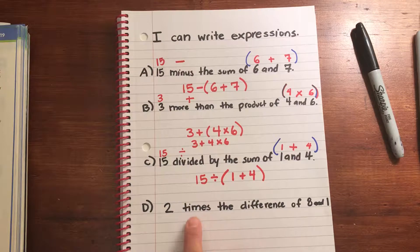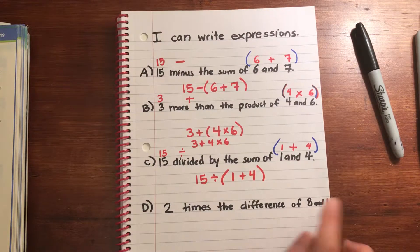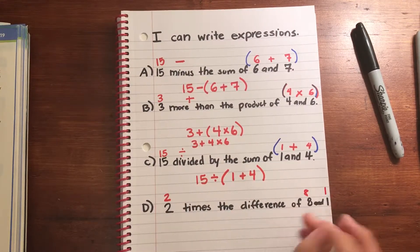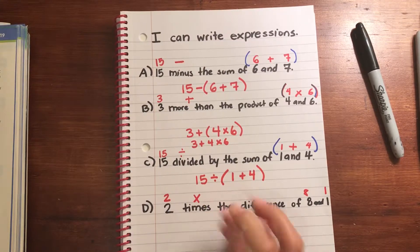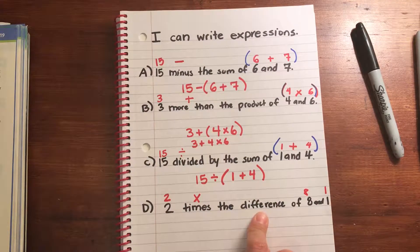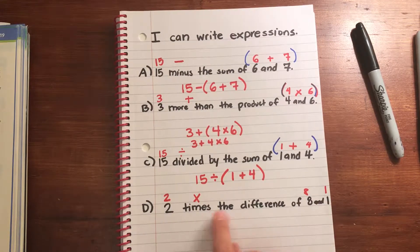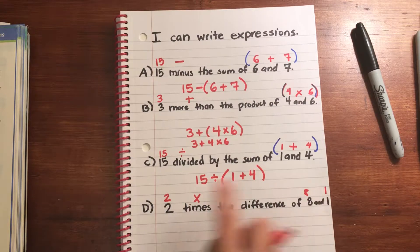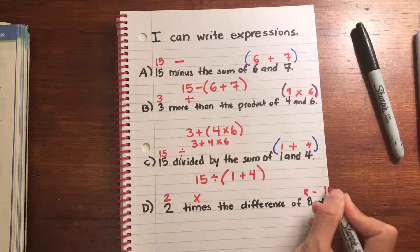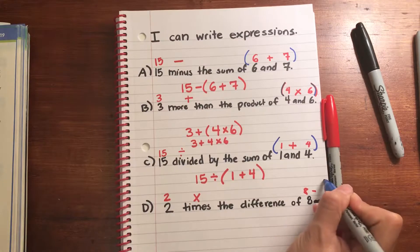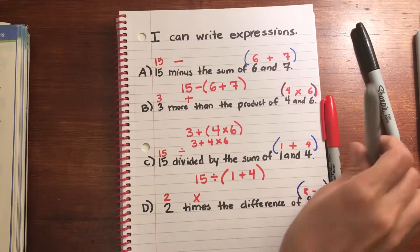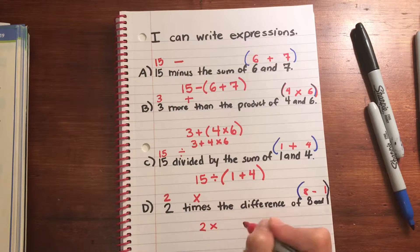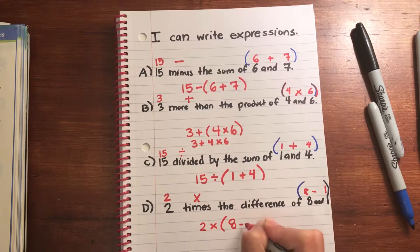Last one: '2 times the difference of 8 and 1.' I'll read all my numbers up top. The difference is the answer to a subtraction problem. So I have to find the difference of 8 and 1 first, and then multiply. I'm going to put parentheses around 8 and 1: 2 × (8 − 1).